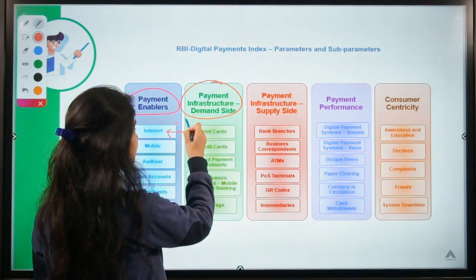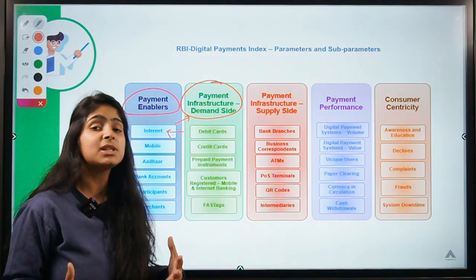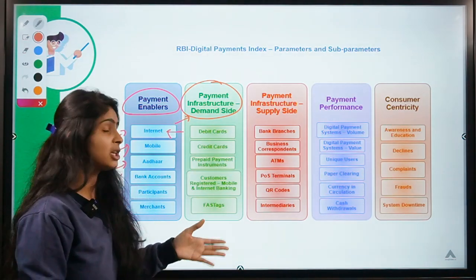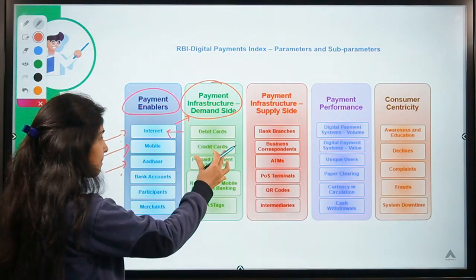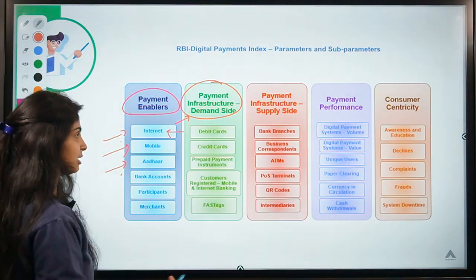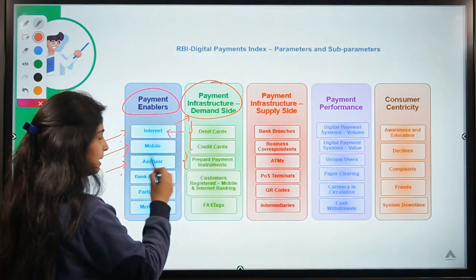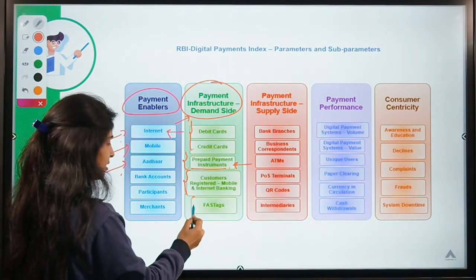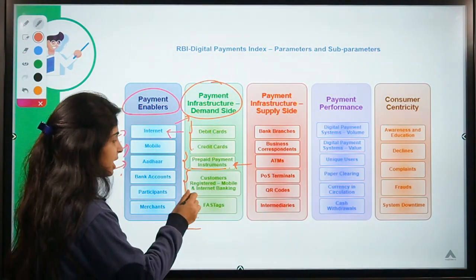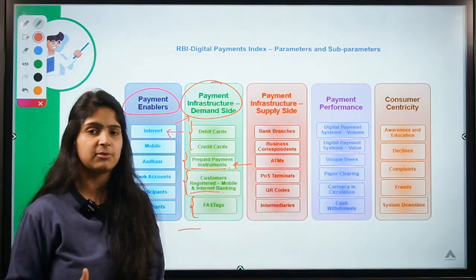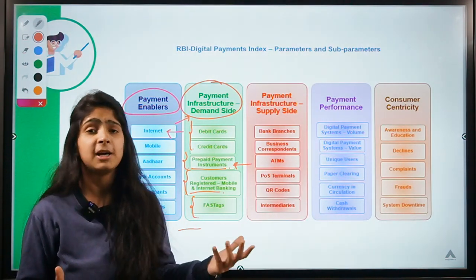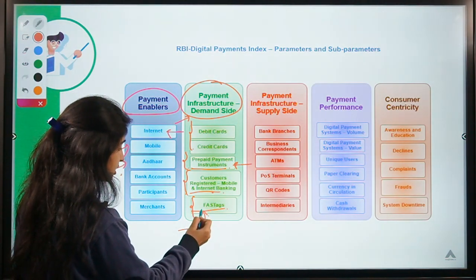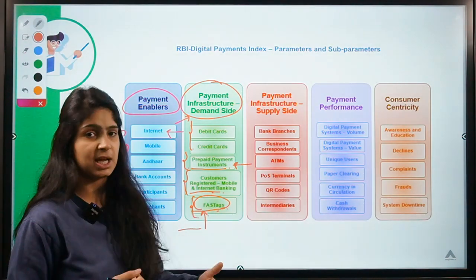After that, payment infrastructure — demand side. Basically this gives an idea of what is the demand for this payment infrastructure, meaning how many people are needing such infrastructure so that they can make a digital payment. Sub-parameters include: how many people are making payments through debit or credit cards, or prepaid payment instruments (PPIs), mobile and internet banking, and FASTag. Before the penetration of UPI, internet banking used to be one major source of payment. But now after getting familiar with Paytm, Google Pay, or PhonePe, internet banking has lost the market a little. FASTag is also another means as it allows payments when you are travelling at far-off distances.